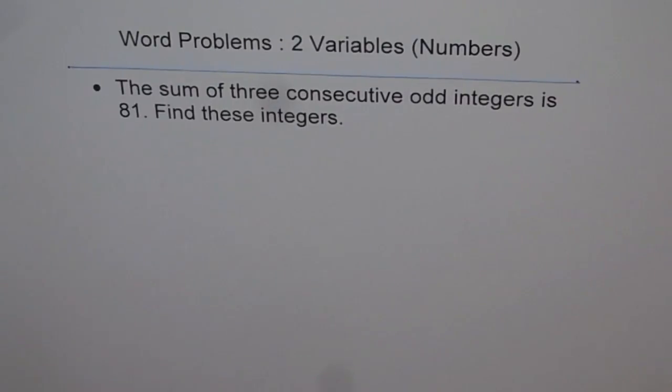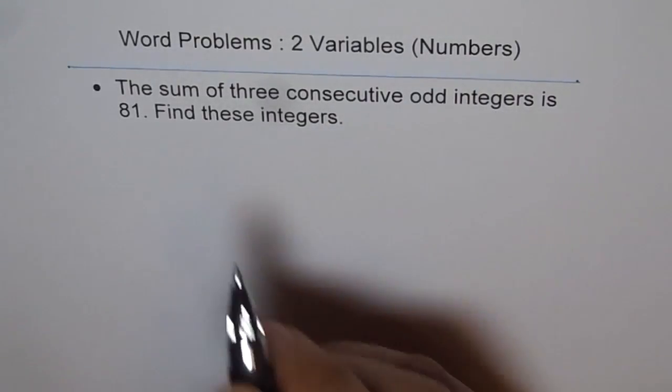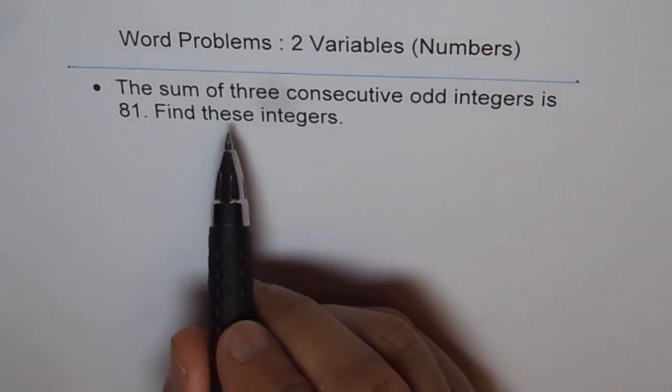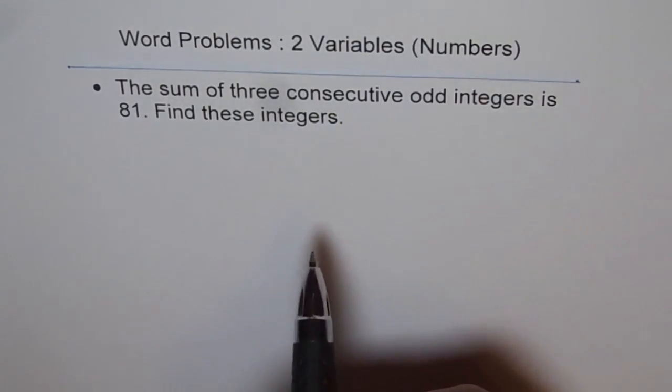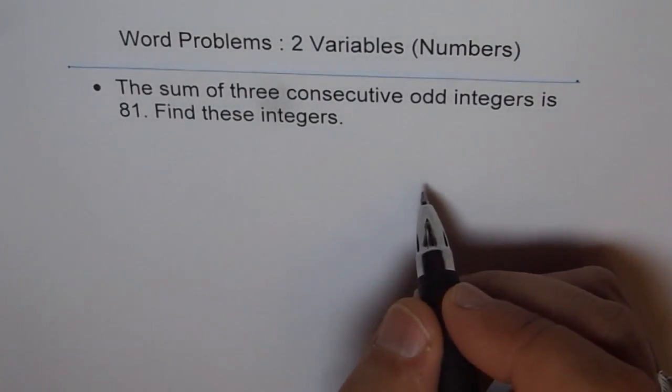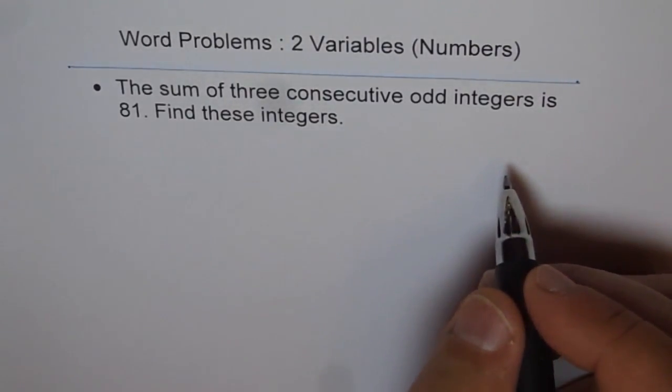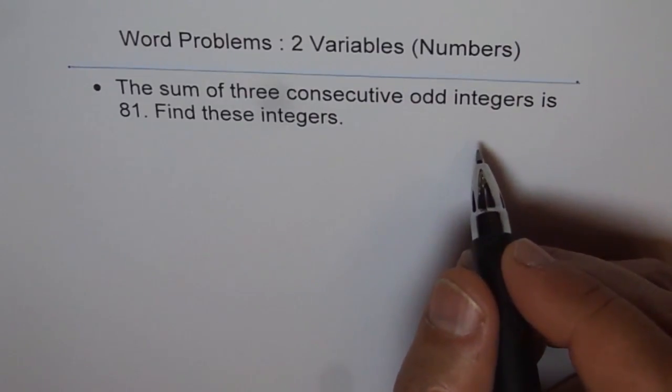The sum of three consecutive odd integers - at times I have seen it difficult to understand what is the meaning of three consecutive odd integers. Let's take an example. What are odd integers? Like 3, 5, 7 - those are odd integers. It could be even -3, -5, -7.